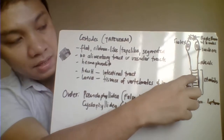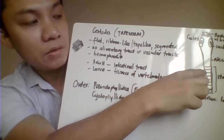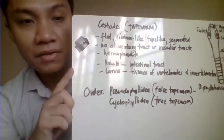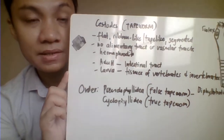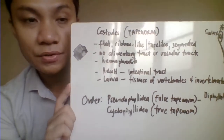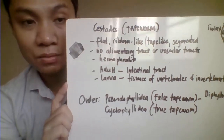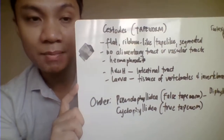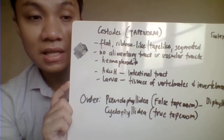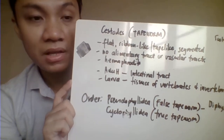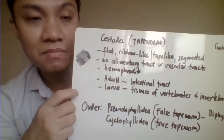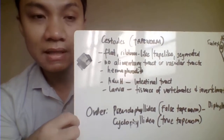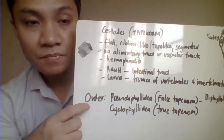The strobila is divided into several segments, making this a segmented worm. They don't have an alimentary tract or a vascular system for adult worms, just like trematodes. They are also hermaphrodites — monoecious — meaning they house both male and female reproductive organs. The adult worm inhabits the gastrointestinal tract in the definitive host, whereas larval stages are found in tissues of the intermediate host, which can be vertebrates or invertebrates.